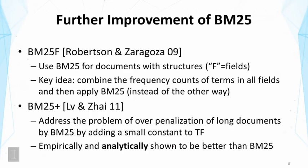The other line of extension is called BM25+. In this line, researchers have addressed the problem of over-penalization of long documents by BM25. The fix is actually quite simple: we can simply add a small constant to the TF normalization formula. What's interesting is that we can analytically prove that by doing such a small modification, we fix the problem of over-penalization of long documents by the original BM25. The new formula called BM25+ is empirically and analytically shown to be better than BM25.